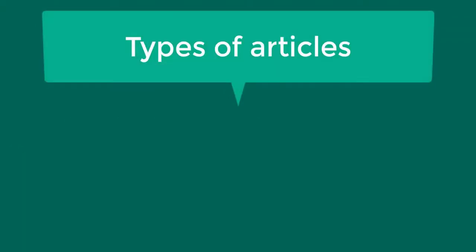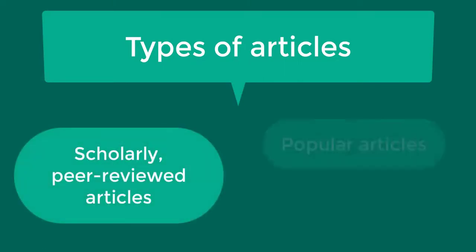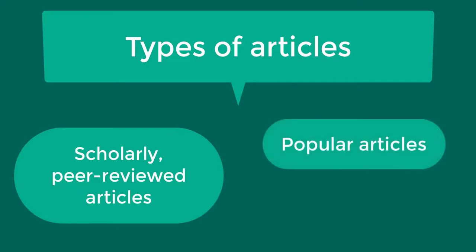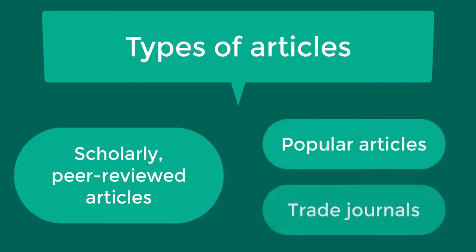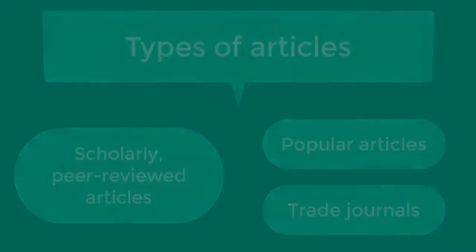There are a variety of different types of articles that can be used to find information. We will talk about the differences between scholarly peer-reviewed articles, popular articles, and articles from trade journals — covering what they are, how to identify them, and when to use them as sources for your assignments.